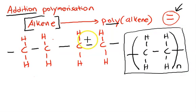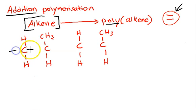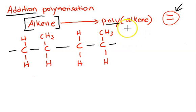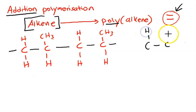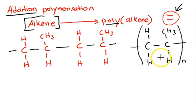Now we try with propene. This is one molecule of propene and another molecule of propene. What happens is they will break this double bond and form a single bond to connect themselves. So if you want to write polypropylene, you just write the same structure, copy it, put a bracket, don't forget the bond lines at the ends, and put the 'n' over here — which means this is polypropylene.